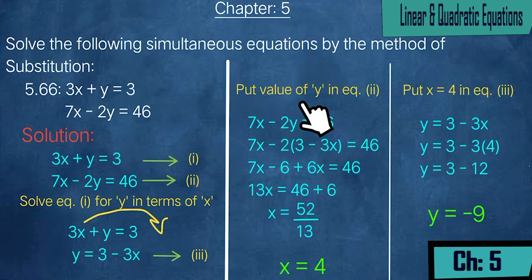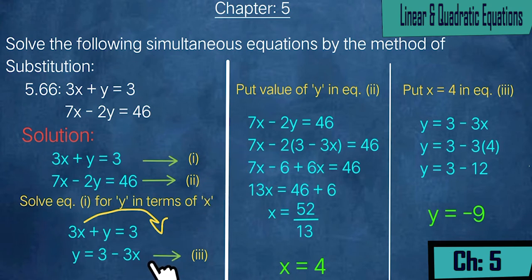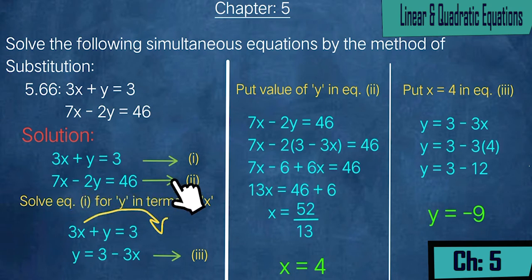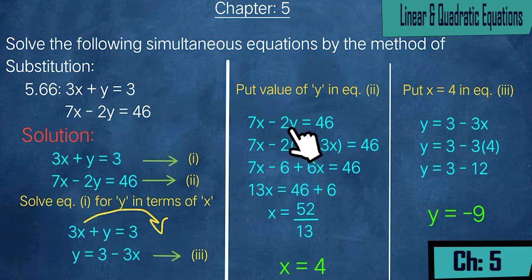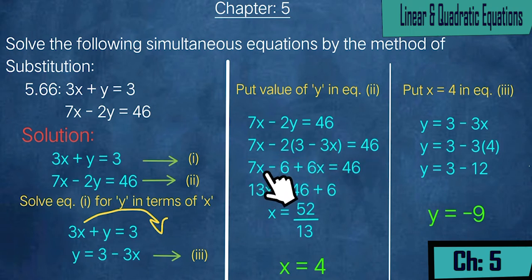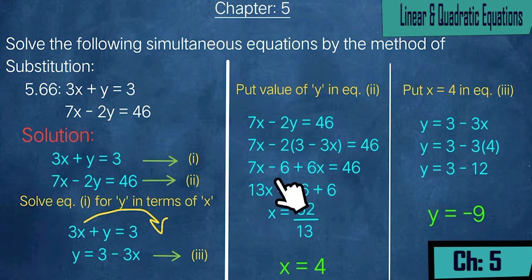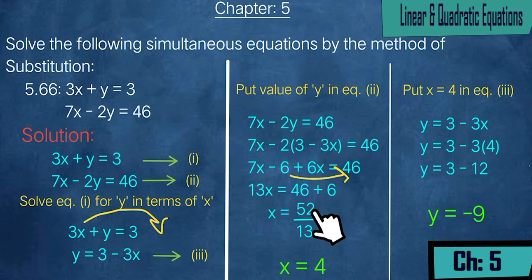After this we put the value of y into equation 2. Equation 2 was 7x - 2y = 46. Where y appears, we write 3 - 3x. So we have 7x - 2(3 - 3x) = 46. Multiplying: 2×3 = 6, 2×3x = 6x, and with the minus sign it becomes +6x. So 7x + 6x = 13x. Shifting -6 to the other side: 46 + 6 = 52. So 13x = 52, and dividing both sides by 13 gives x = 4.